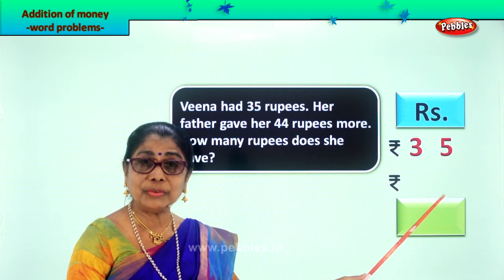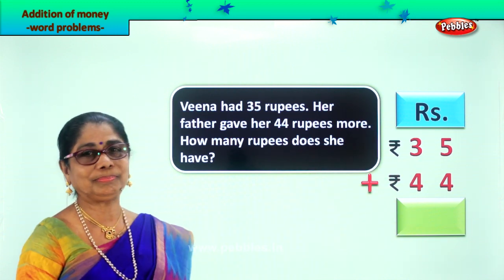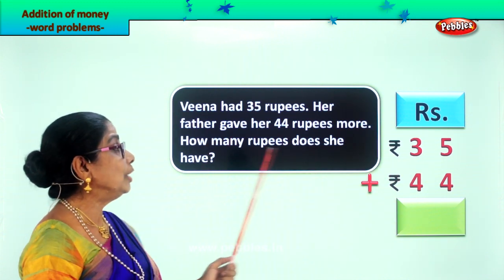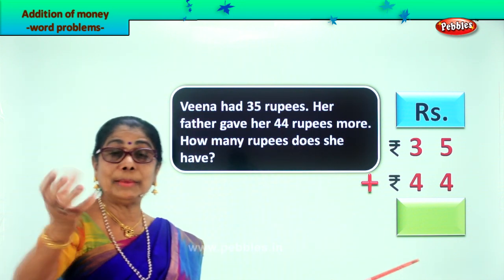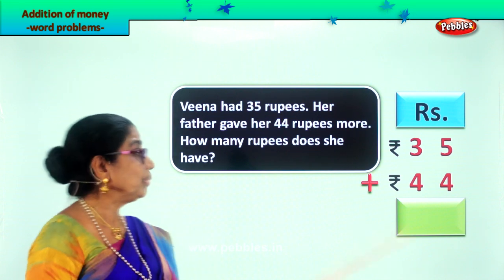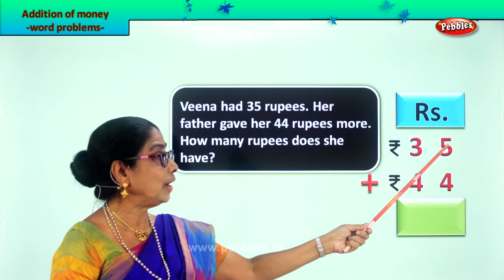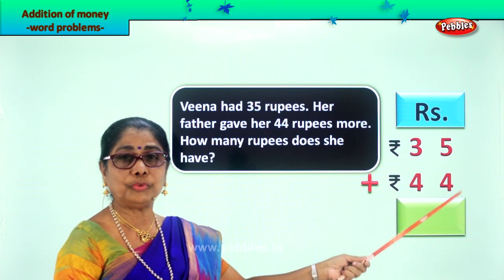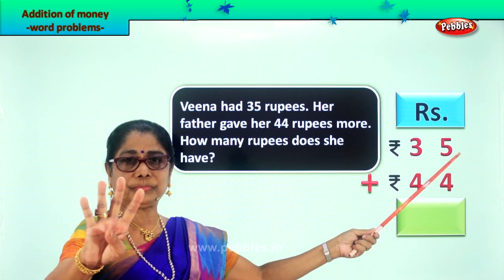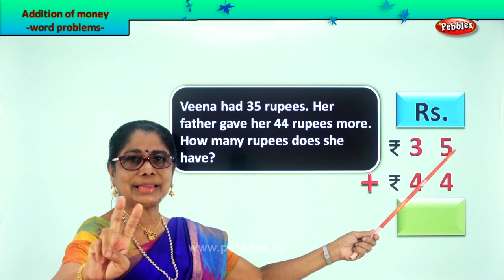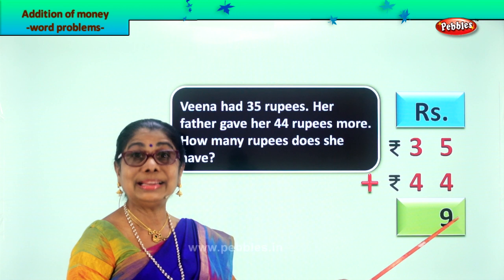How much money did her father give? Father gave her rupees 44. So we write down rupees 44. Now we add together. In the ones place we have 5 and 4. Five plus four is nine, so we write down 9 here.